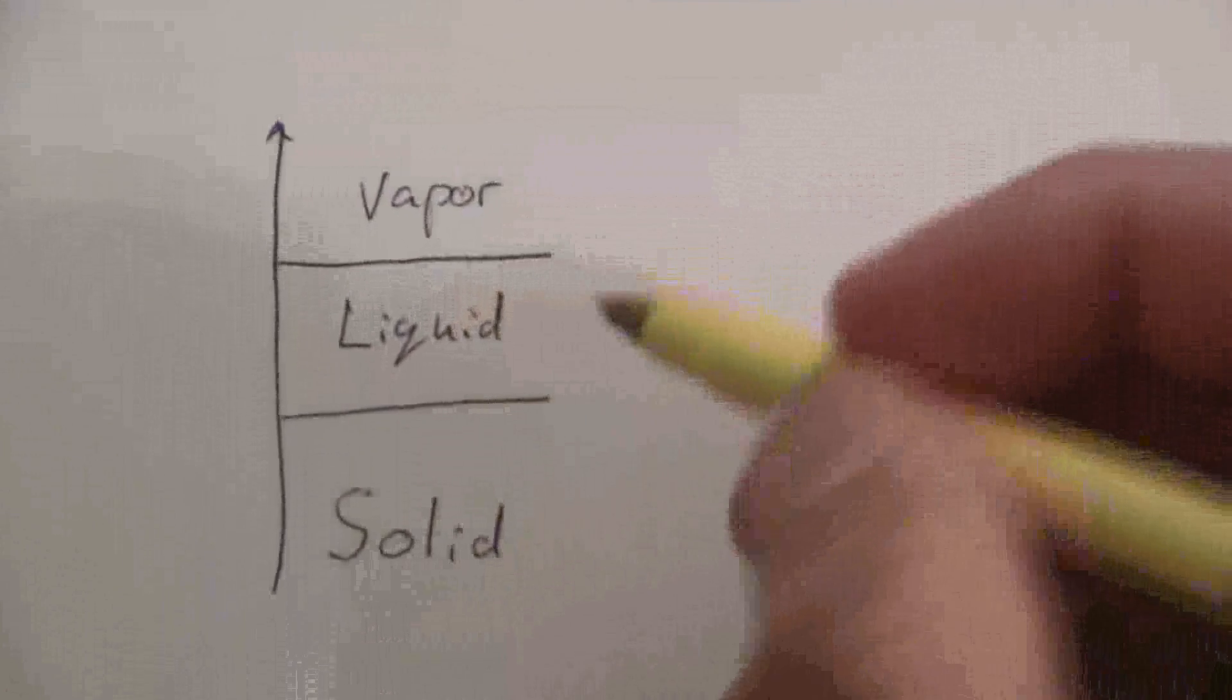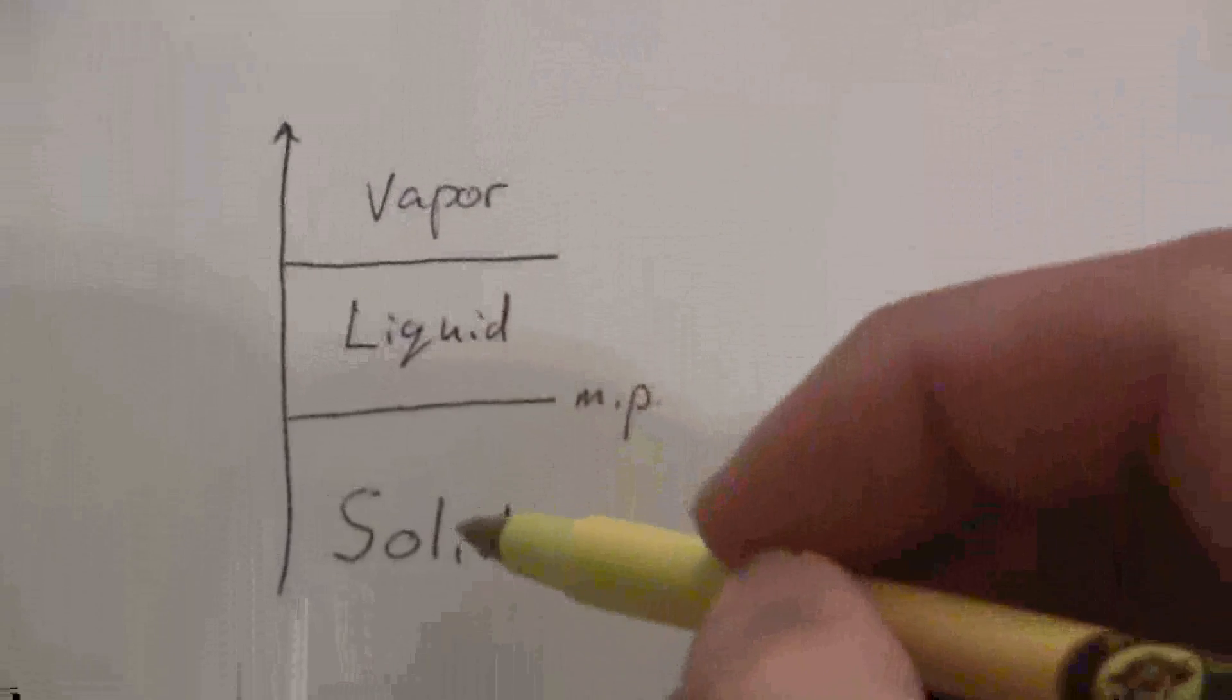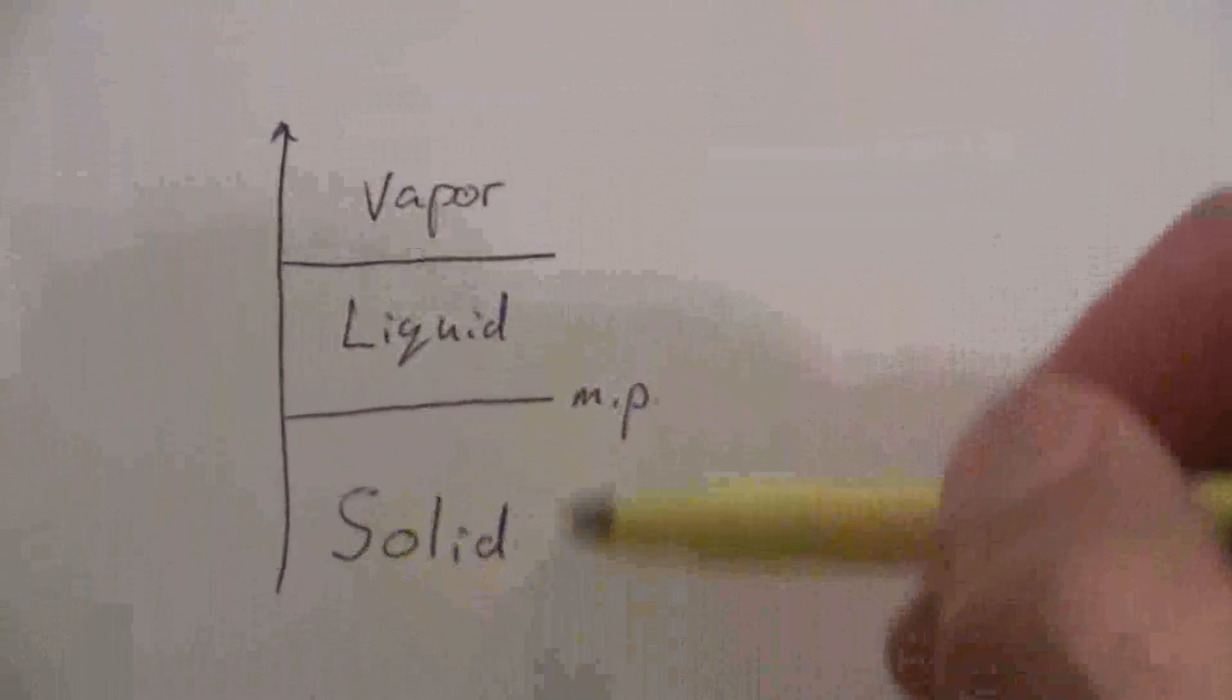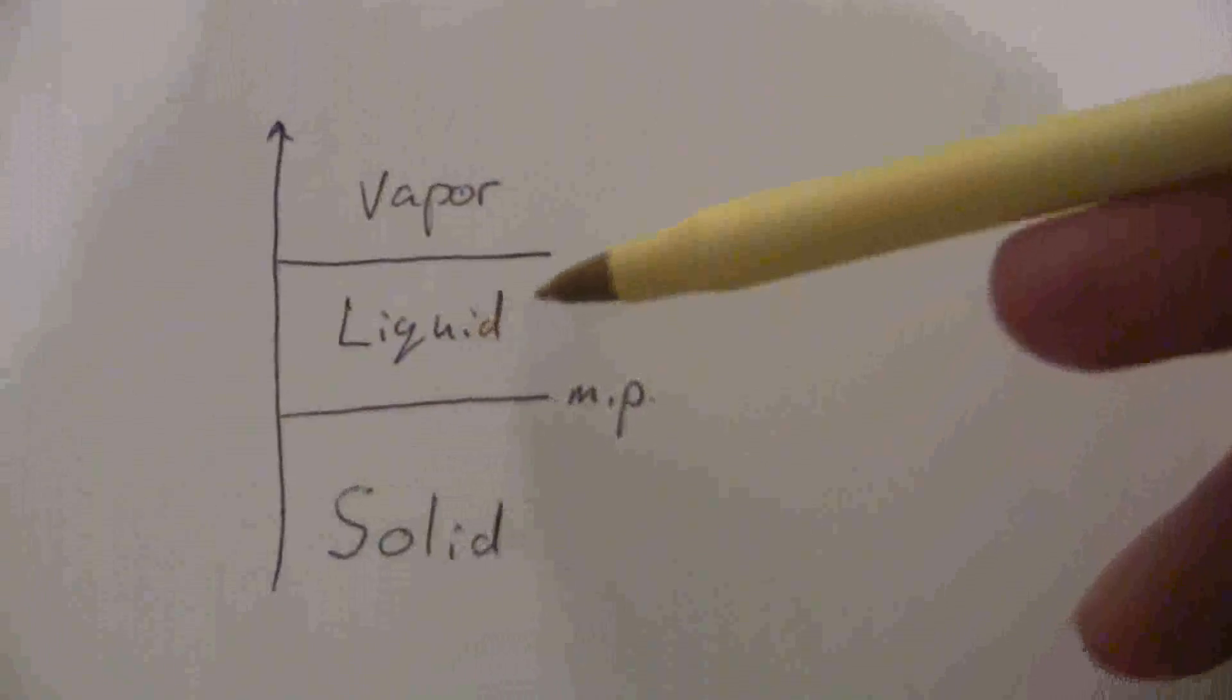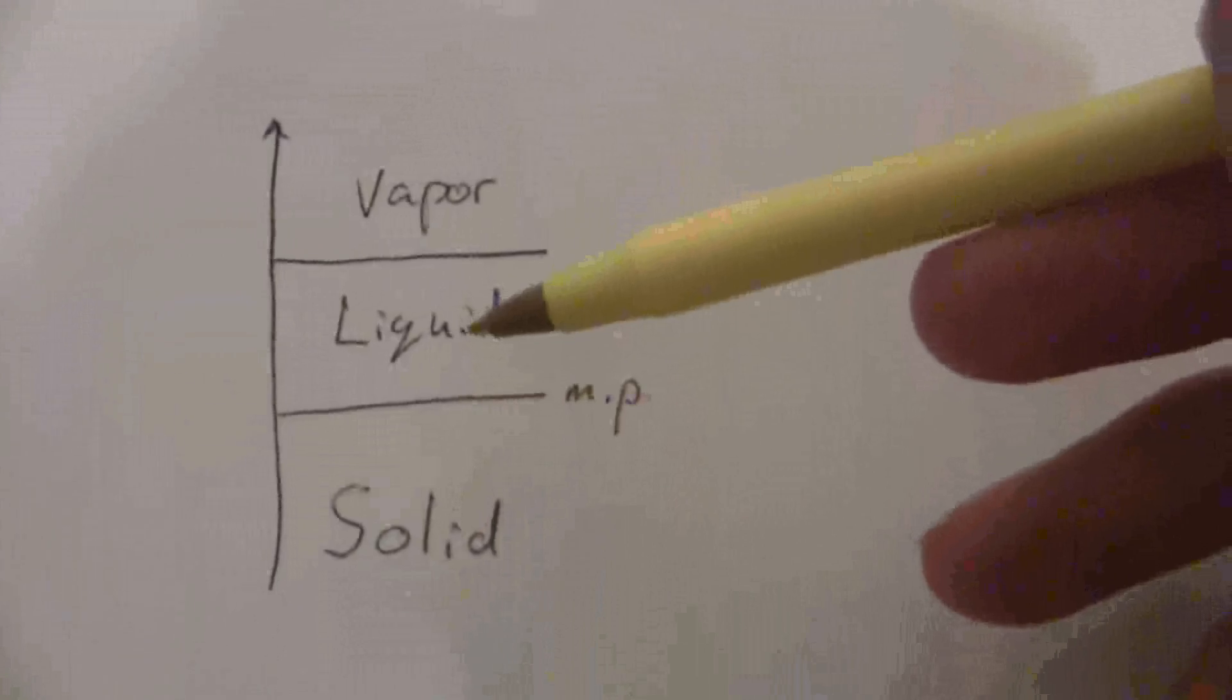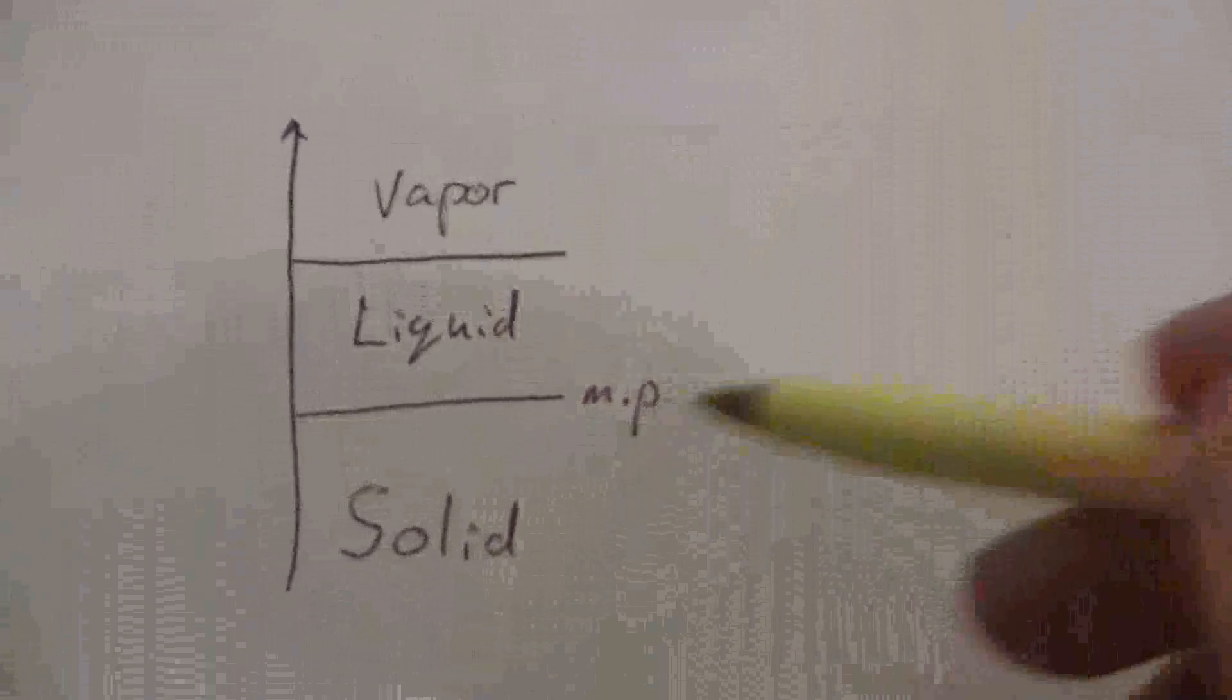The transition from solid to a liquid is the melting point. Like, for example, when ice melts, ice is the solid, it melts into the liquid water. Alternately, the same point can be looked at from the opposite perspective. Going from a liquid to a solid, the liquid freezes into a solid. So that would be the freezing point, the melting point, the same point on the temperature scale.